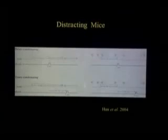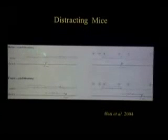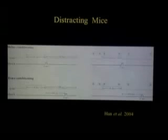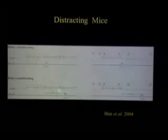Here is the mouse protocol — humans are slightly different. You have a 16-second tone, then the shock, then about three minutes before the next pairing, and you do six pairings total. Aversive delay conditioning works very robustly in mice. For trace conditioning, you have a 16-second tone, then an 18-second gap, and then the shock.